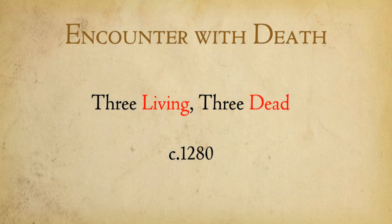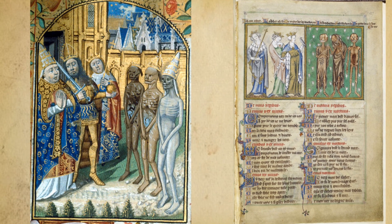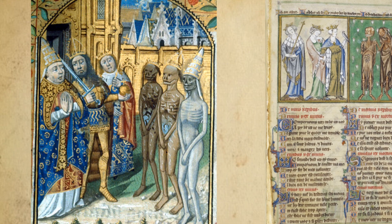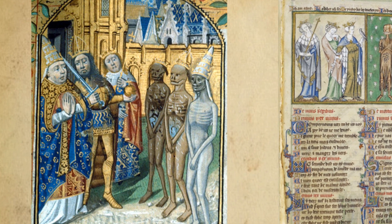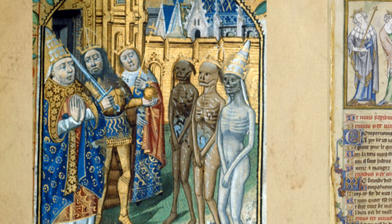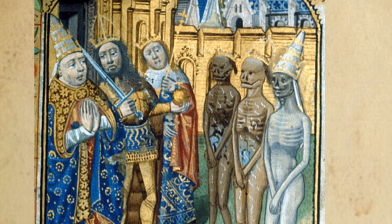Let us move on and take a look at a rather quaint medieval story called Three Living, Three Dead. The medieval story of Three Living, Three Dead is an imagined encounter with death. Three people, usually represented as kings or princes, encounter three corpses. Sometimes the corpses speak and say, 'Soon you will be like us.' It is an odd story because it appears to have so little content, but as you will see, we can unpack it.